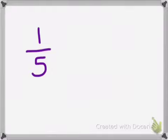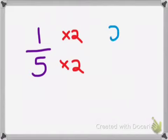If I multiply the numerator by two and the denominator by two, the new fraction that I'm going to get is two-tenths. And I got that from doing one times two is two, five times two is ten. So two-tenths would be equivalent to one-fifth.